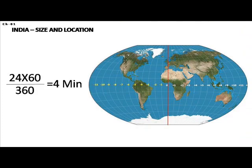The Earth makes one complete rotation of 360 degrees in one day, or 24 hours. It passes through 15 degrees in one hour, or one degree in four minutes. The time difference is to be added in the case of places to the east of a point, and subtracted in the case of places to the west.